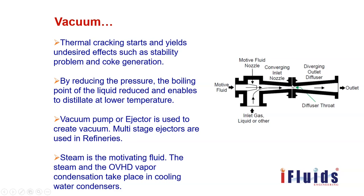When the motive fluid steam passes through the motive fluid nozzle and into the converging section of the ejector — this is called the throat of the ejector — the pressure is drastically reduced. In the diverging outlet or diffuser, the velocity increases manifold and attains sonic velocity. Because of this high velocity of steam flow, a void space is created in the steam chest. To fill that void space, vapor or gas is sucked from the vacuum tower — and by that we are creating vacuum in the tower.